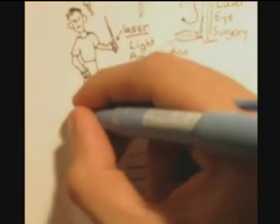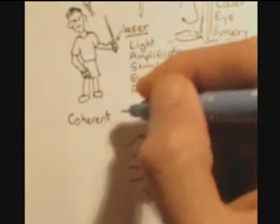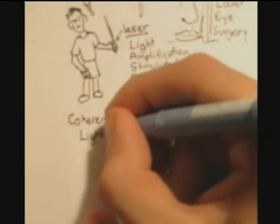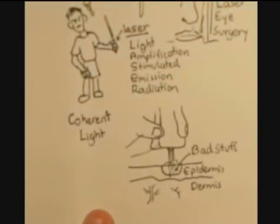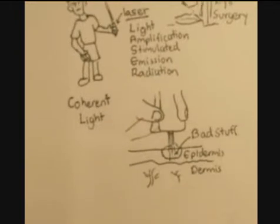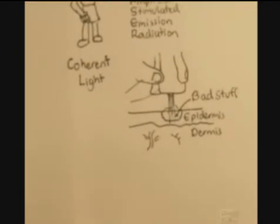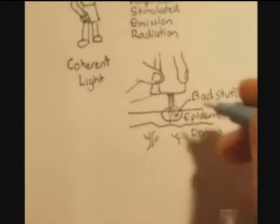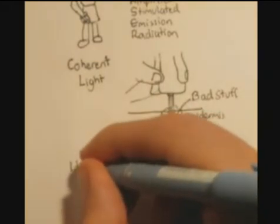So what differentiates laser light to normal light is because laser light is coherent. What coherent means is that each ray of light is synchronized, the phase of light is synchronized with each other. It's the same, it's coherent.